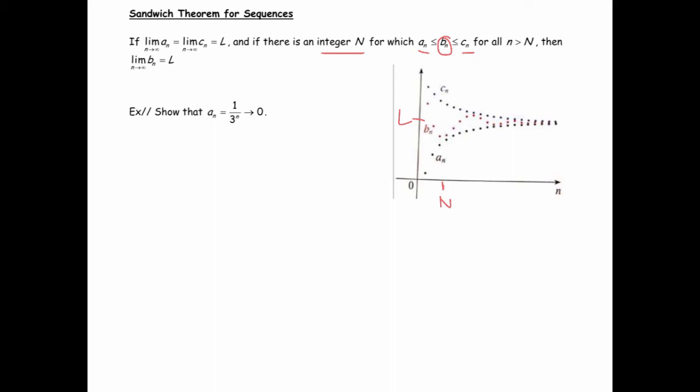What will often happen is you'll be asked to prove something using the Sandwich Theorem, which ultimately means you need to come up with the two pieces of bread that are sandwiching it. We'll use this example here to start. I know that there's other ways to reason why this goes to zero, but let's just use the Sandwich Theorem as an exercise. It says show that a_n equals 1/(3^n) goes to zero using the Sandwich Theorem.